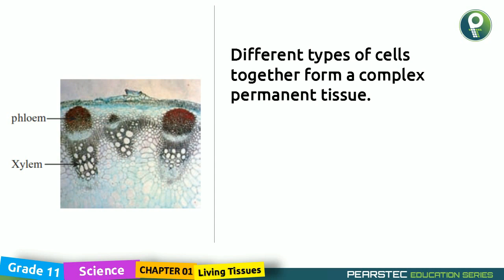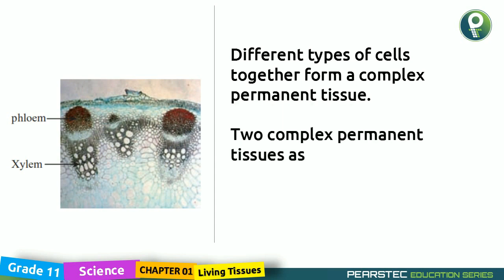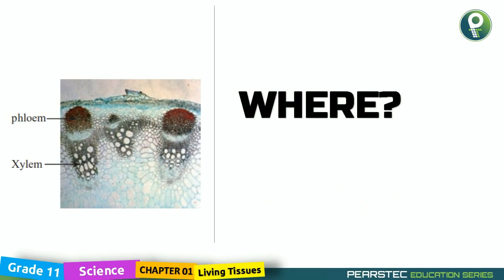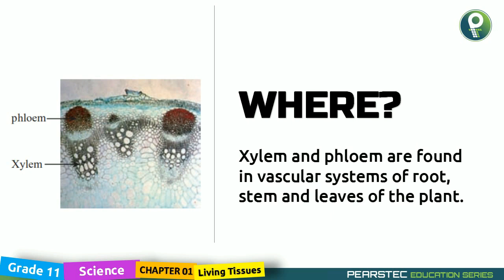Different types of cells together form a complex permanent tissue. Two complex permanent tissues are there: xylem and phloem. Those can be identified in plants. Xylem and phloem are found in the vascular system of the root, stem and leaves of the plant.